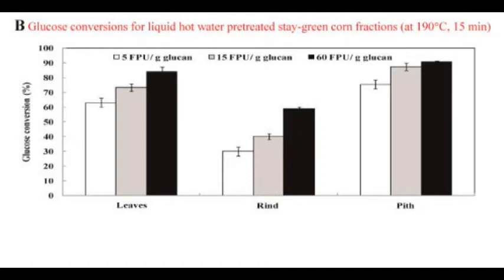These results suggest that understanding how cell walls are assembled by the plant differently in each type of tissue may give clues as to why plant biomass is so recalcitrant, or difficult to bioprocess into sugars for making biofuels and other bioproducts.